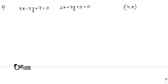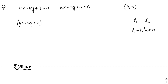Sum number two: find the equation of the line through the intersection of the lines 4x - 3y + 7 = 0 and 2x + 3y + 5 = 0 and the point (-4, 5). If two lines L1 and L2 intersect, the condition is L1 + kL2 = 0. So we write: (4x - 3y + 7) + k(2x + 3y + 5) = 0.